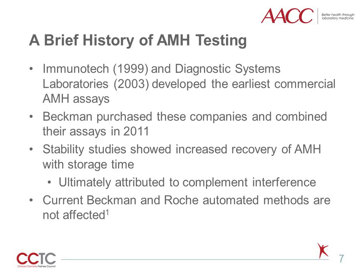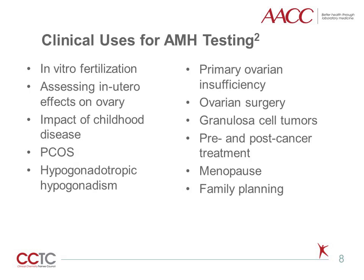The discovery of this issue created confusion and necessitated multiple updates to the assay, including adding a pre-dilution step to neutralize complement, and it likely delayed more widespread implementation of AMH testing. Current automated assays are not impacted by complement interference. Why would one want to measure anti-mullerian hormone? This list highlights a number of applications. It's important to note that while clinical utility has been demonstrated for many of these applications, commercial AMH assays may not be FDA-approved for all applications. For example, the Roche and Beckman assays are approved only for assessment of ovarian reserve, while Anschlab's assay is FDA-approved only for assessing menopausal status.